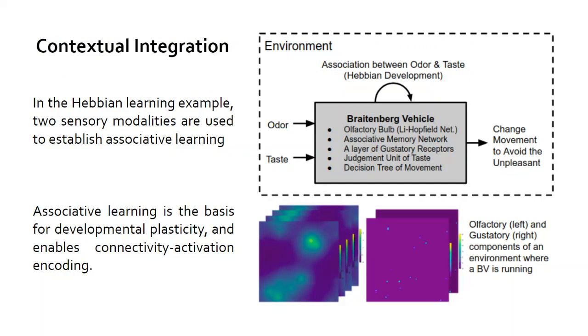One way we can do that is through contextual integration, using our developmental Braitenberg vehicle and Hebbian learning to achieve this. In this Hebbian learning example, we have two sensory modalities used to establish associative learning: an odor and a taste. As you can see from the bottom right, we have spatial distributions of these sensory inputs. The odor and the taste can be distributed in space differentially. The reason you'd want to do that is to actually train the agent in a way that's sort of predictive. Associative learning is the basis for development of plasticity and enables connectivity activation and coding. It also allows us to play with the inputs in different ways so that you can actually get the agent to distinguish between two different sensory inputs and maybe find the differential relationships between odor and taste and help the agent to learn.